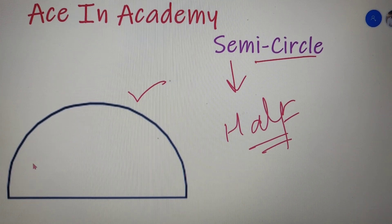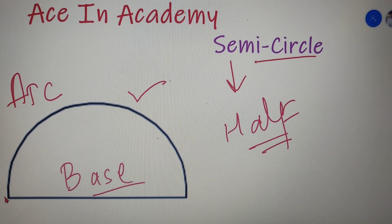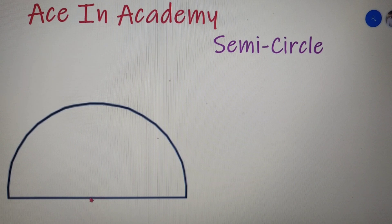You can basically divide a semicircle into two parts. The first is the curved part, which is called the arc of the semicircle. The base of the semicircle is the straight line that joins the two endpoints of the semicircle, and the midpoint of this base is called the center of the semicircle. The radius is the distance between the center of the circle to any point that lies on the boundary of the circle.